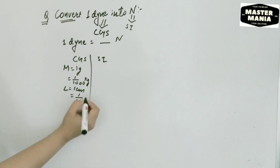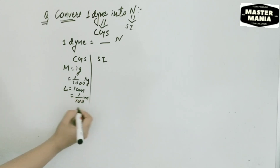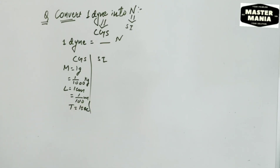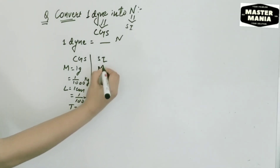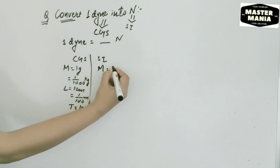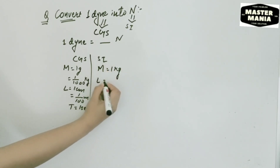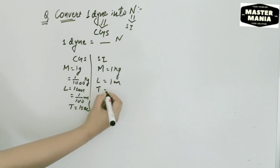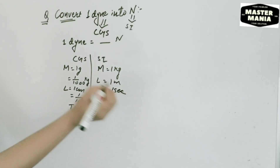In SI unit, length is written as one by one hundred meter. Time is equal to one second — since in both CGS unit and SI unit the unit of time is second. In SI unit: mass is equal to one kg, length is one meter, and time is one second.